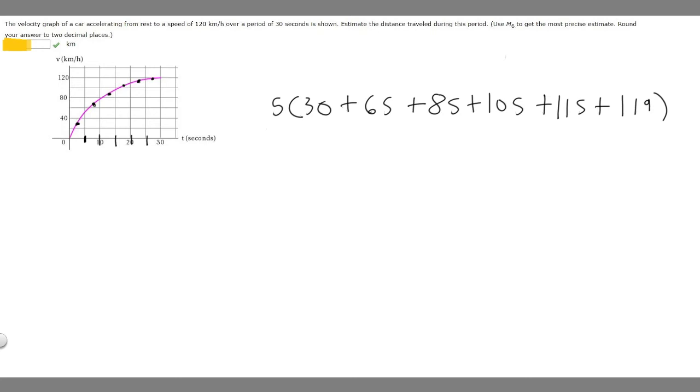And so what you want to do is add all these together and then multiply it by 5. For me when I go ahead and do that I'm going to get 2,595.